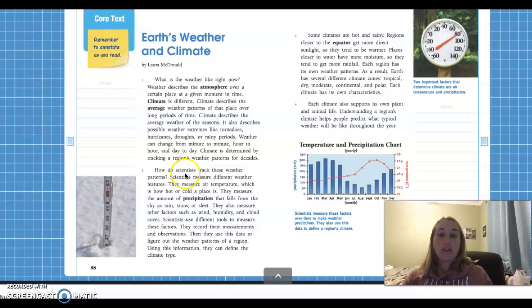All right guys, paragraph two, how do scientists track these weather patterns? Scientists measure different weather features. They measure air temperature, which is how hot or cold a place is. Remember they use this to measure temperature. They measure the amount of precipitation that falls from the sky as rain, snow, or sleet. They also measure other factors such as wind, humidity, and cloud cover. Scientists use different tools to measure these factors. They record their measurements and observations. Then they use this data to figure out the weather patterns of a region. Using this information, they can define the climate type.